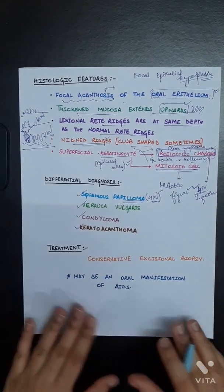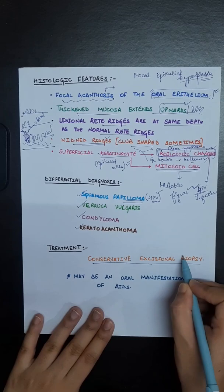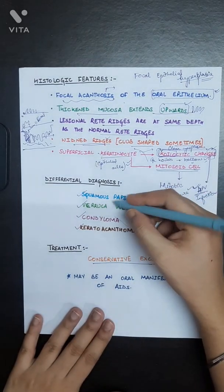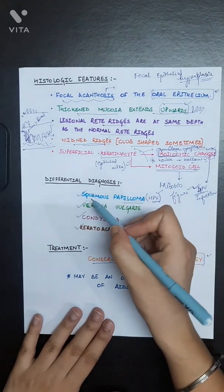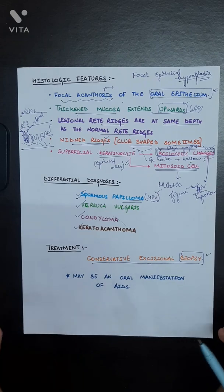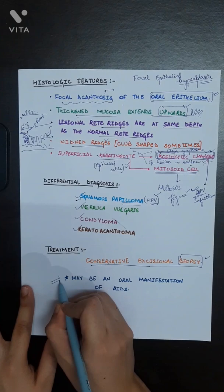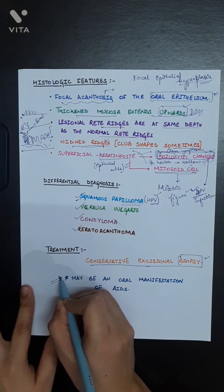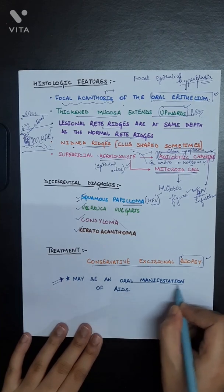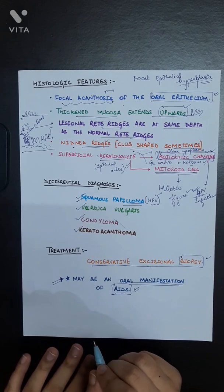Now the treatment part. You can do a conservative excisional biopsy to rule out whether it is focal epithelial hyperplasia or any of these conditions like squamous papilloma, verruca vulgaris, condyloma, etc. But you should always consider and remember that it may be an oral manifestation of AIDS, which is a very important point.